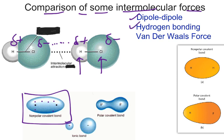Hydrogen bonding is a unique type of dipole-dipole, and we'll tackle that on the next slide. But before moving on, I want to state that with ionic bonding, we don't talk about Van der Waals, dipole-dipole, or hydrogen bonding. All these intermolecular forces are between molecules and involve covalent bonding. With ionic bonding, there is a total transfer of electrons, so we have to be able to recognize covalent bonds from ionic bonds — that's important for the upcoming test.